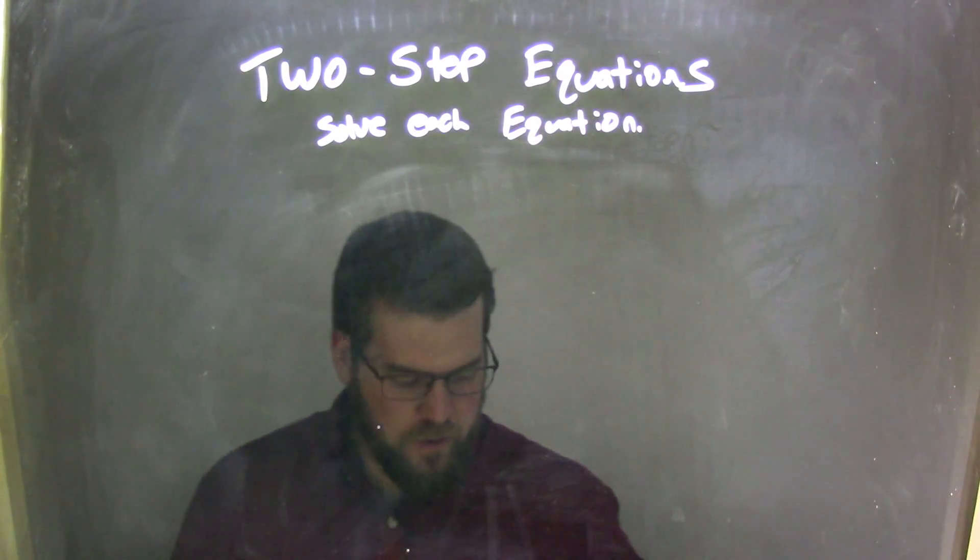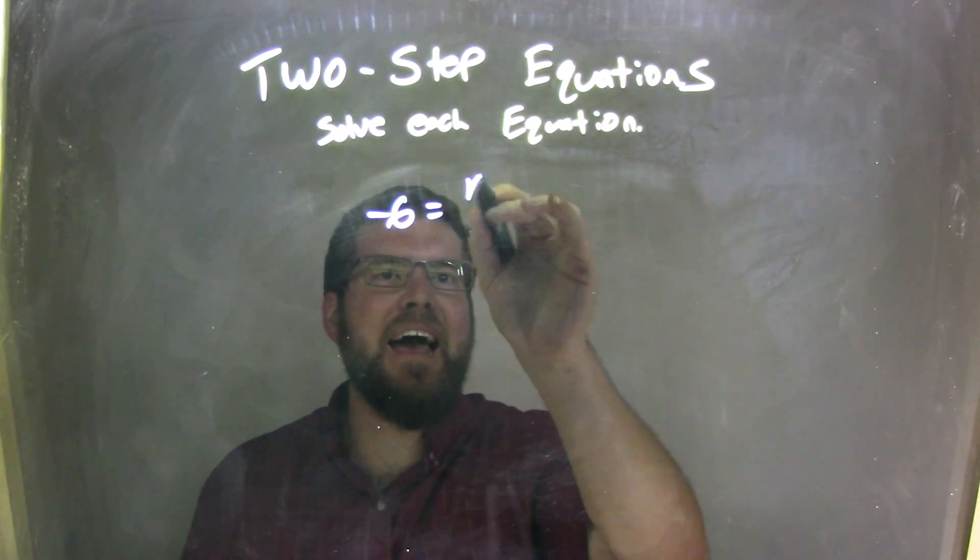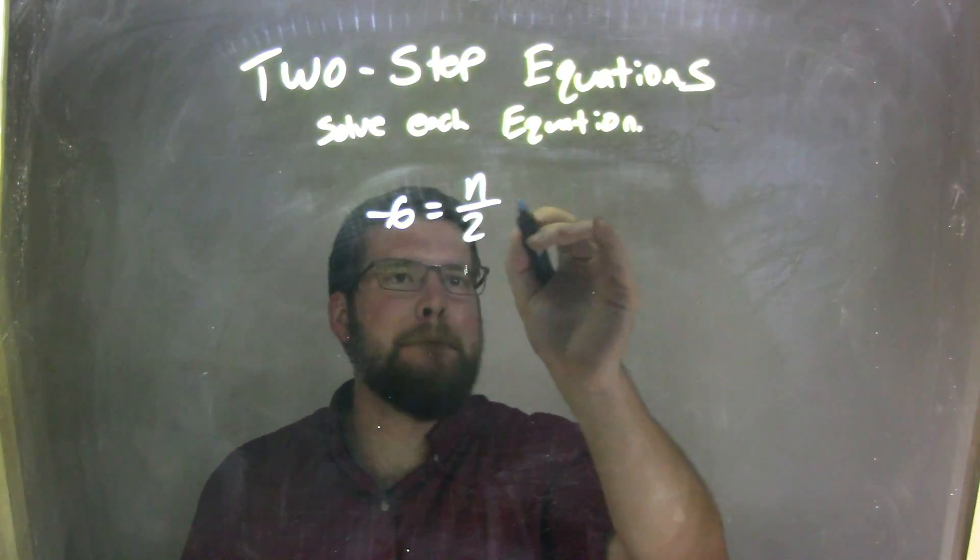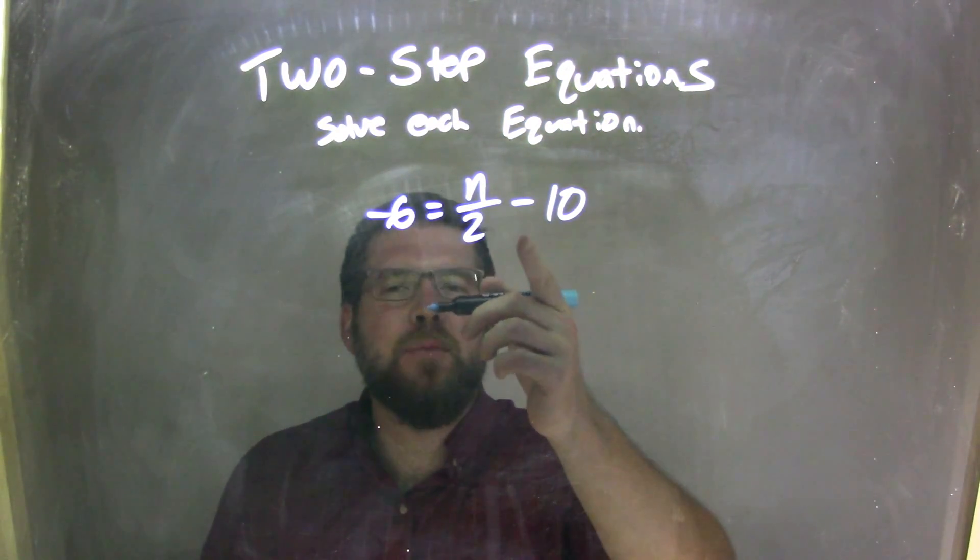So if I was given this equation, negative 6 equals n over 2 minus 10, that subtraction here,